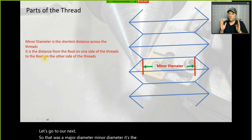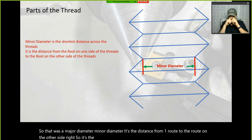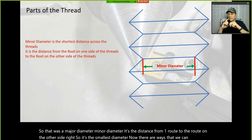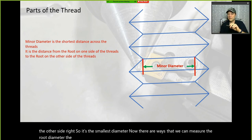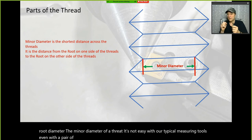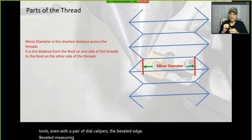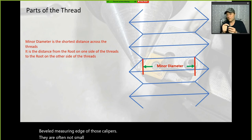The minor diameter is the distance from one root to the root on the other side — it's the smallest diameter. It's not easy to measure with typical tools. Even with dial calipers, the beveled measuring edge is often not small enough to reach the root of the thread.